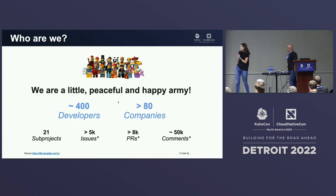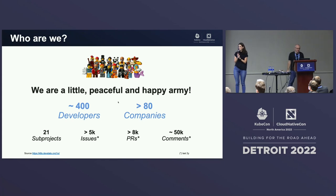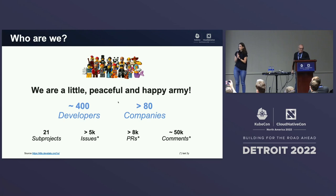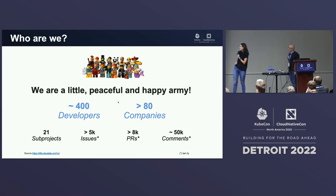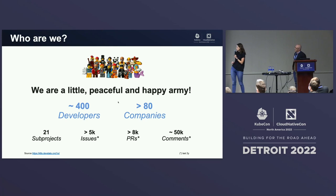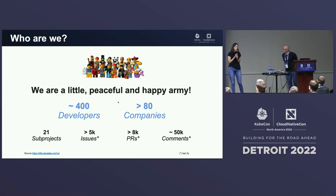Let's talk numbers. Who are we? We're about 400 developers across 80 companies — that's a pretty impressive number. We have 21 subprojects. I don't know if there's a count of who has the top number of subprojects in Kubernetes, but I think we might win. Over the last two years, we've had thousands of issues, PRs, and comments across our various projects.